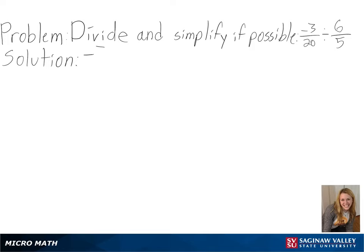Our problem is to divide and simplify, if possible. Negative 3 over 20 divided by 6 over 5.